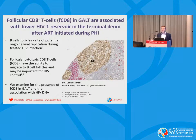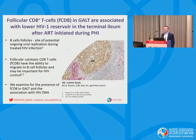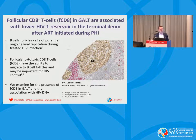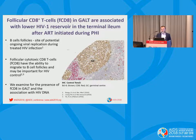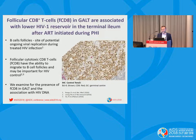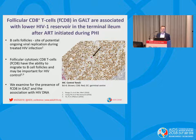The B cell follicle, as has been previously discussed, is a site of potential ongoing viral replication during treated HIV infection. Follicular cytotoxic CD8 T cells have been shown to migrate to the B cell follicle and may be important for HIV control. In this immunohistochemistry section, BCL6 as a germinal center marker is in brown and CD8 is in red — you can see a few CD8 cells within the germinal center. In this study, we wanted to examine the presence of follicular CD8 cells in gut-associated lymphoid tissue and look for associations between these cells and HIV DNA.